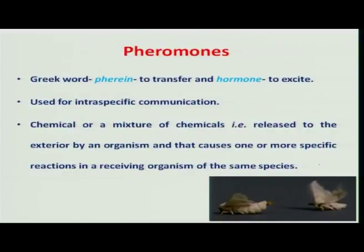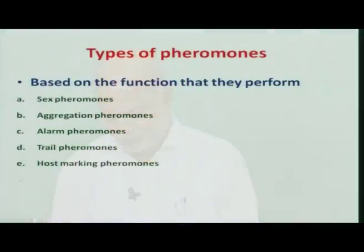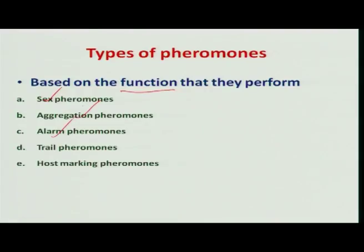Now let us see what exactly pheromones are, which are used for intraspecific communication. These pheromones are chemicals or mixtures of chemicals released to the exterior environment by a species and bring out changes in another organism of the same species. Based on their function, we can divide pheromones into sex pheromones, aggregation pheromones, alarm pheromones, trail pheromones, and host marking pheromones.